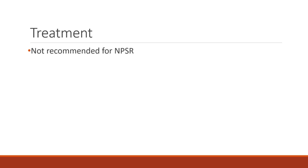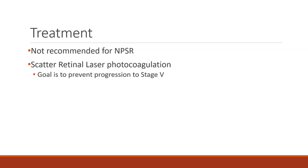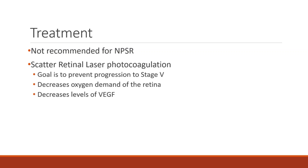Treatment is not recommended for non-proliferative sickle cell retinopathy and should be focused on controlling systemic sickle cell disease. Scatter retinal laser photocoagulation is the mainstay of treatment in proliferative sickle cell retinopathy stages 3 and 4. However, small sea-fans can be managed with observation as they might auto-infarct, resolving on their own. The goal of this therapy is to prevent progression to stage 5, a vision-threatening complication. This therapy decreases oxygen demand of the retina and the levels of VEGF. A complication from this procedure is retinal tears, which occur more frequently following laser treatment in sickle cell retinopathy than in proliferative diabetic retinopathy. Therefore, a risk-benefit discussion should be performed with the patient.